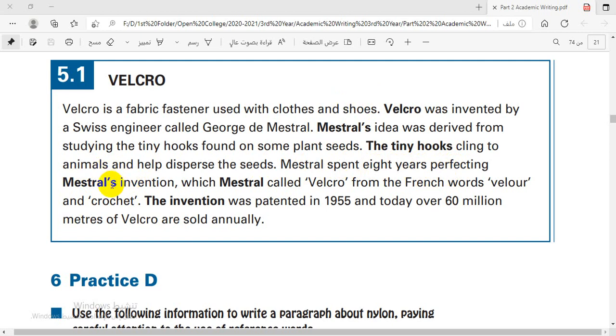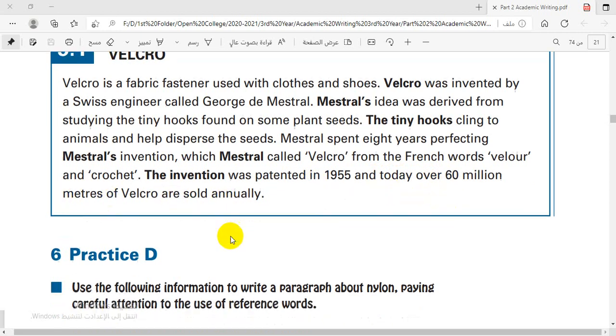The tiny hooks, these words can be replaced by the word they. They cling to animals and help disperse the seeds. Mestral spent eight years perfecting, also this word Mestral can be replaced by the word he because it is repeated. He spent eight years perfecting his invention, Mestral, because if we have possessive we can replace it with possessive pronouns, his invention which he called velcro from the French words velour and crochet. The invention, this was patented in 1955. Patented in Arabic means يمنح براءة. This is in passive voice, was patented in 1955 and today over 60 million meters of velcro are sold annually.